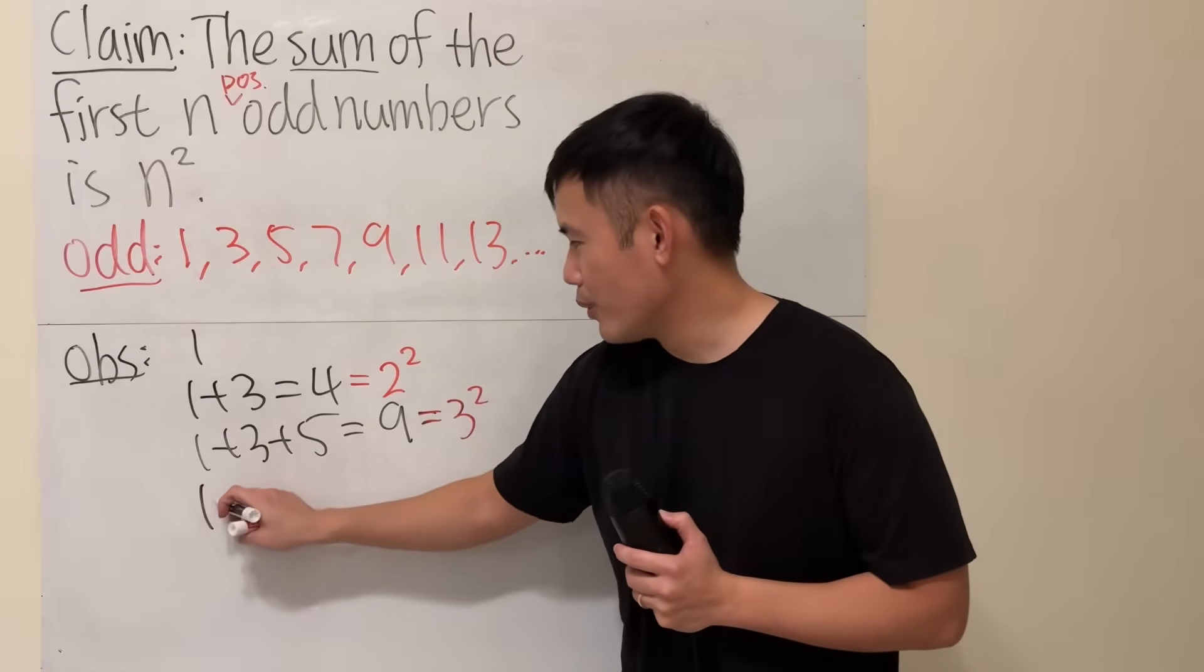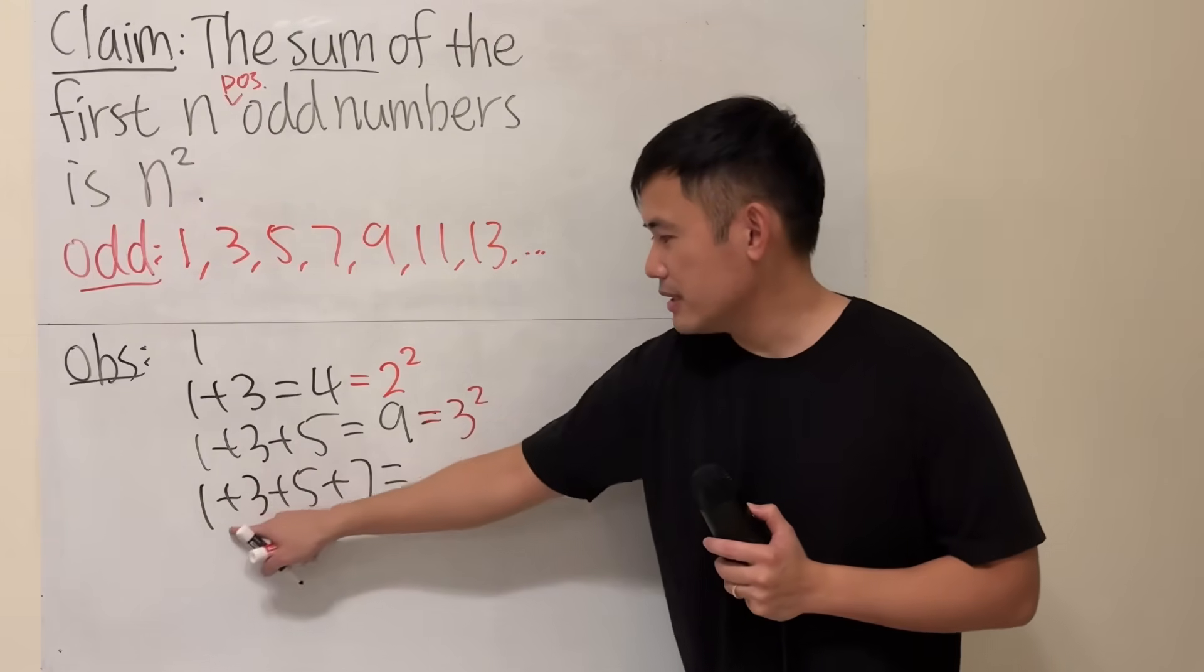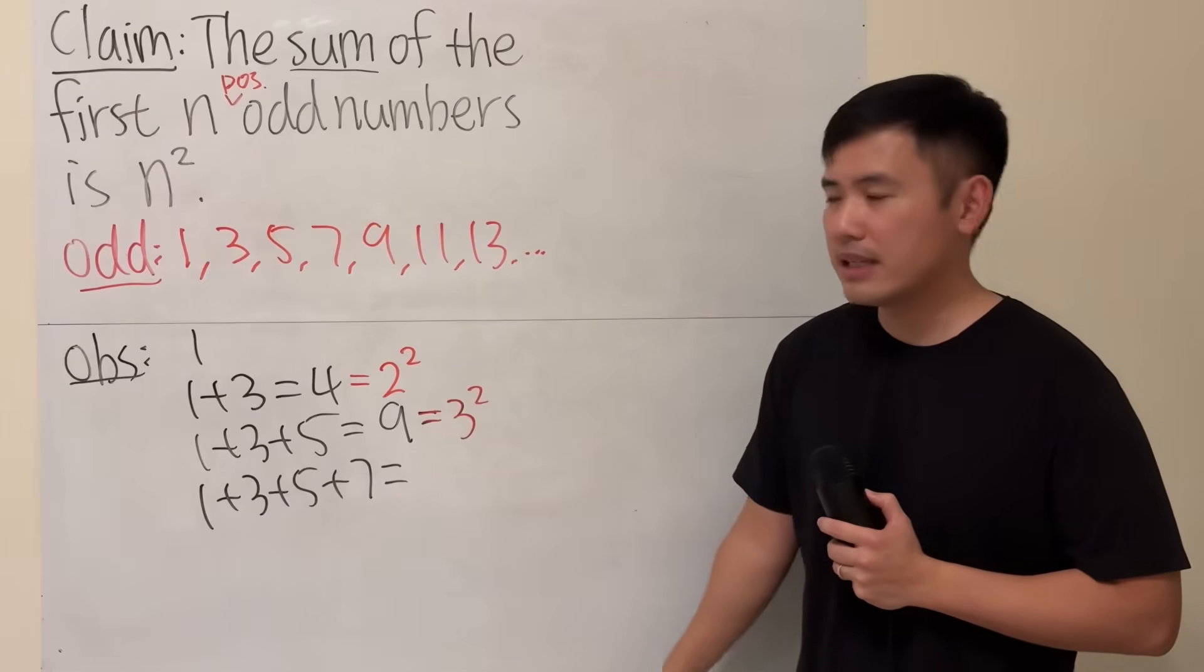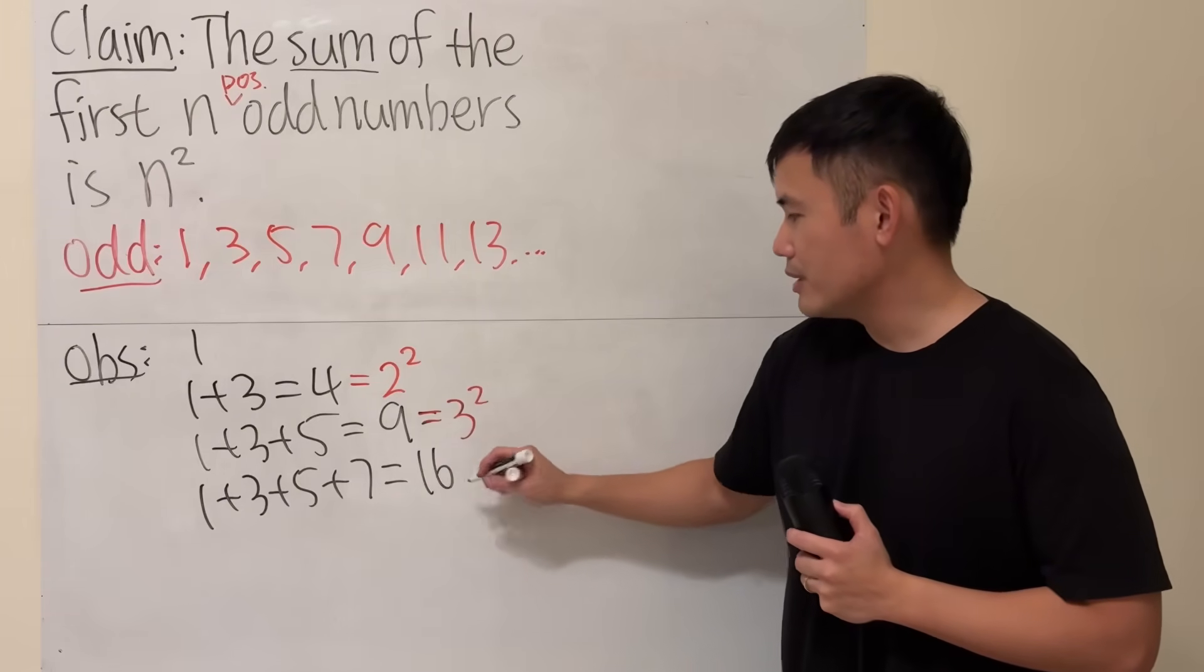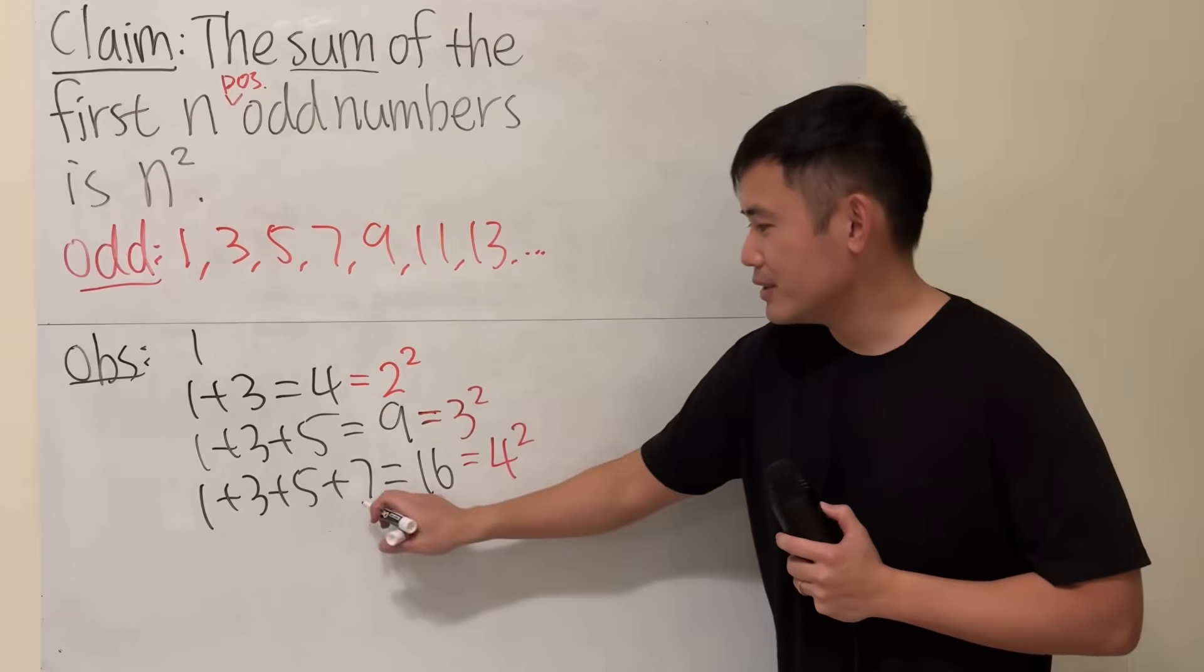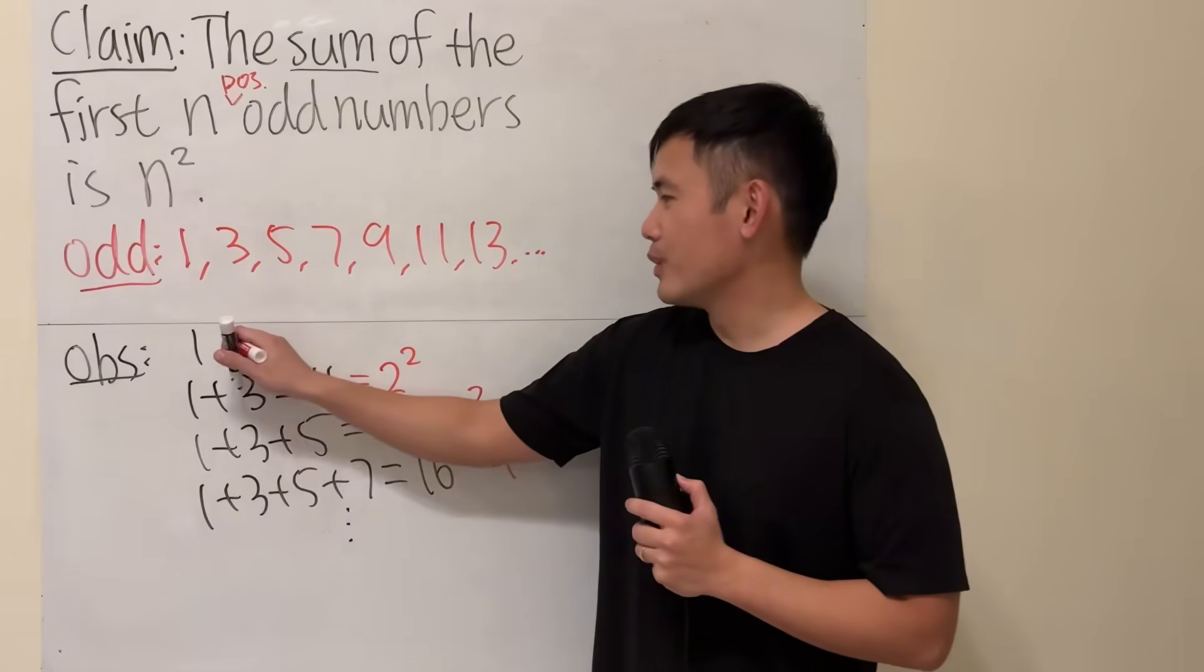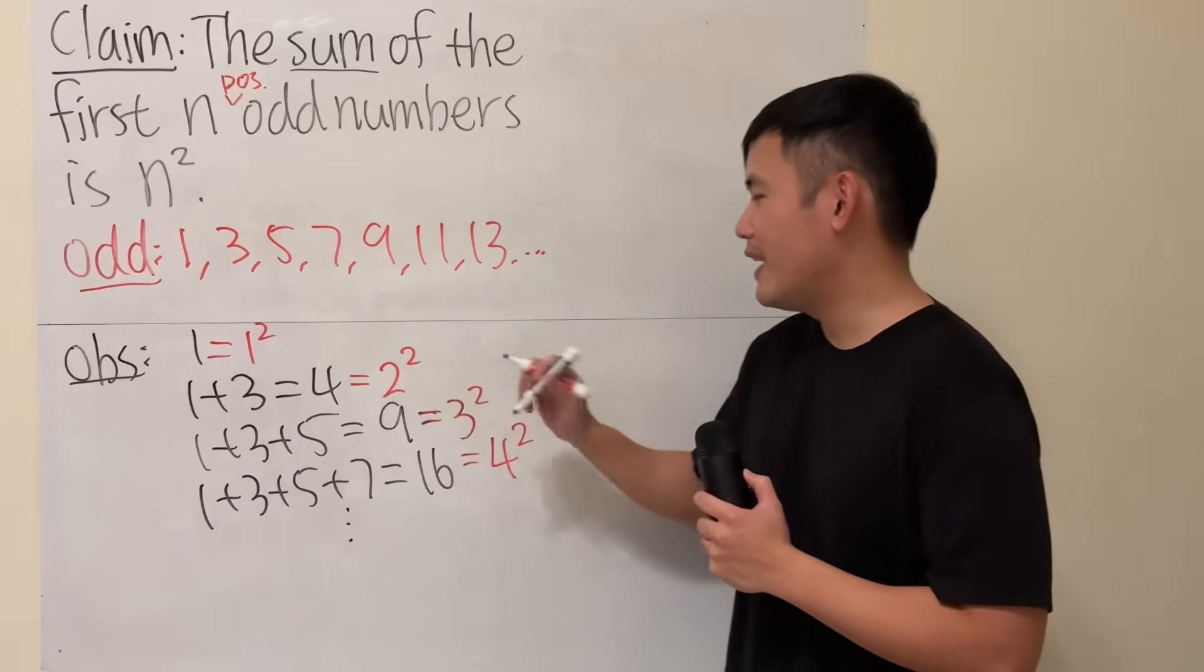And then let's do one more. 1 plus 3 plus 5 plus 7. So this is 9 already. And we just have to add 7. 7 plus 9 is 16, which is 4 times 4, which is 4 squared. And so on. So this is really cool, right? And of course, 1 is the same as 1 squared. Very nice.